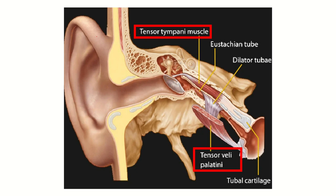Here we can see the ear — the external ear, then the tympanic membrane, the middle ear cavity, and the Eustachian tube going to the nasopharynx. For stability of this Eustachian tube there are two muscles: one is tensor tympani and the other is tensor veli palatini. These two muscles are also supplied by the trigeminal nerve.